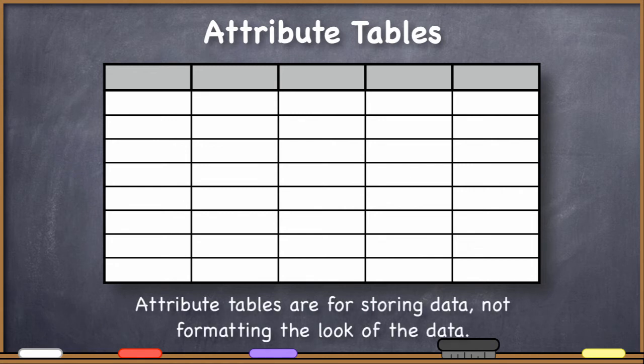With spreadsheets, people are used to just typing in whatever they want into a cell, and then having a lot of control over how the information in the spreadsheet looks, making cells different colors, making text bold or of different sizes, or other things of that nature. We don't do any of that with an attribute table.